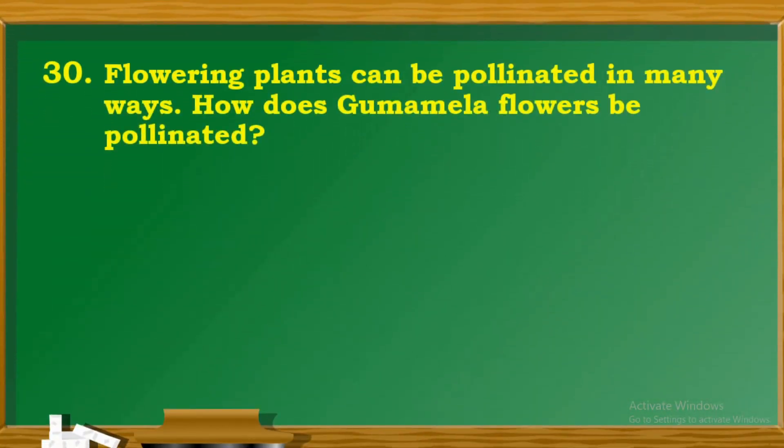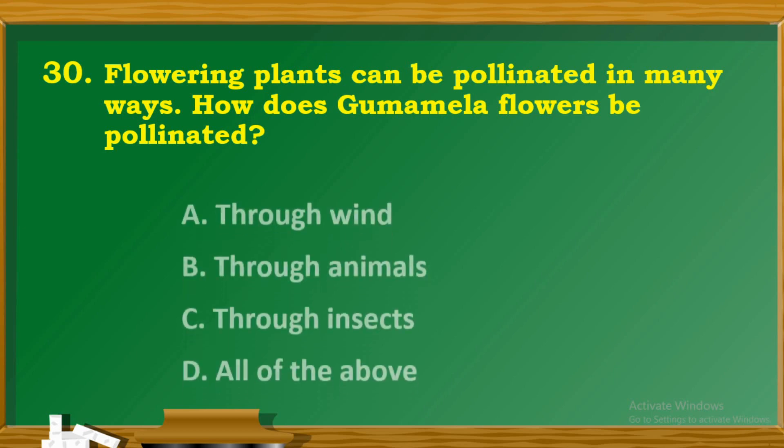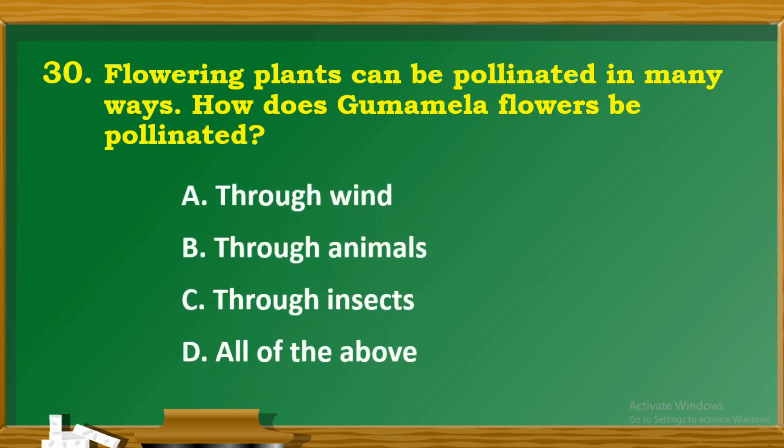Question 30: Flowering plants can be pollinated in many ways. How does the gumamela flower get pollinated? A. Through wind. B. Through animals. C. Through insects. D. All of the above.